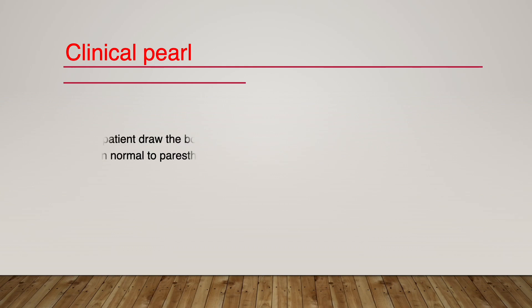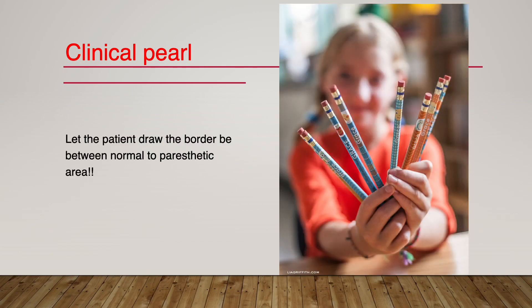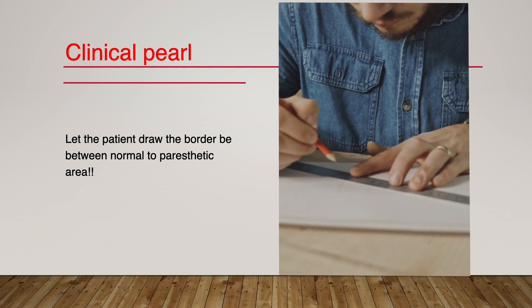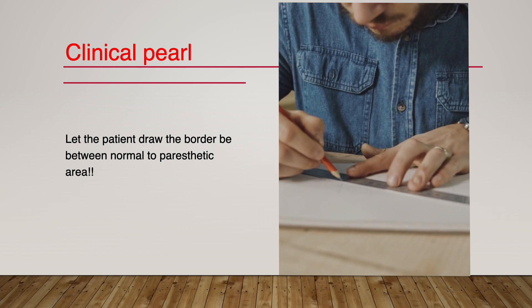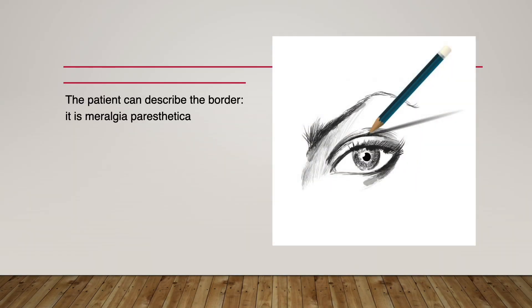This is my key point. If your patient complains of abnormal sensation or pain in the outer thigh, let the patient draw the border between the normal and paresthetic area with a pencil. If the patient confidently draws the border clearly, it is Meralgia Paresthetica.